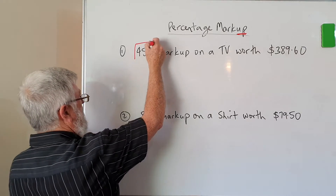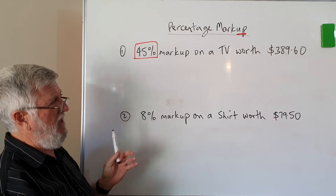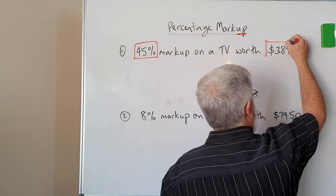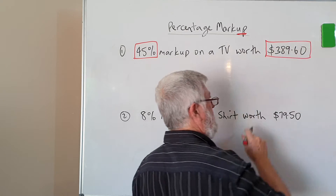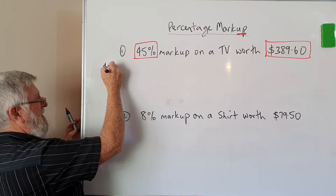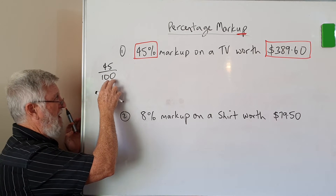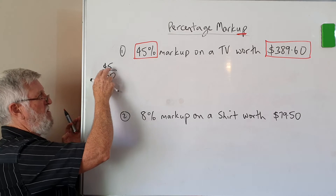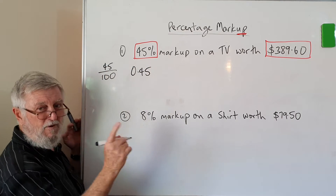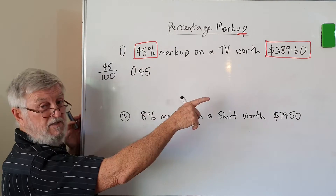Two basic details. You know you're going to get 45% — say you don't understand the words but you know it's 45% — and you know it's $389.60. So you're going to use those two numbers. Instead of 45, I can write 45 out of 100, or when I'm talking about hundreds, two zeros means two decimal places. So if I write that as 0.45, it works better with the money — we're not introducing fractions into the question.